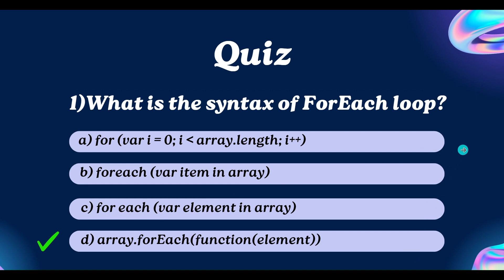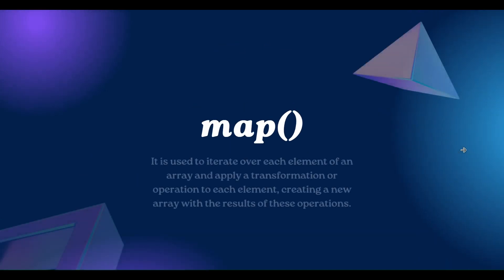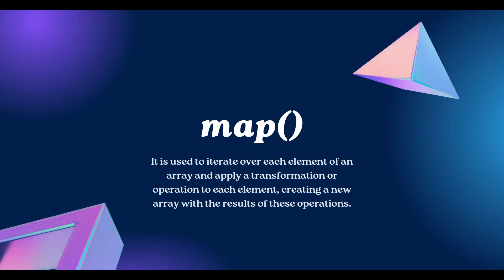Now let's move on to our next topic: map. Map is also used to iterate over each element present in an array, but you can apply a transformation and operate on each element while creating a new array. It results in creating a new array from this operation.